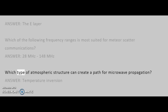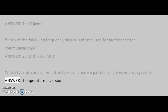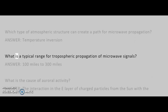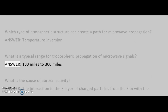Which type of atmospheric structure can create a path for microwave propagation? Answer: temperature inversion. What is a typical range for tropospheric propagation of microwave signals? Answer: 100 miles to 300 miles.